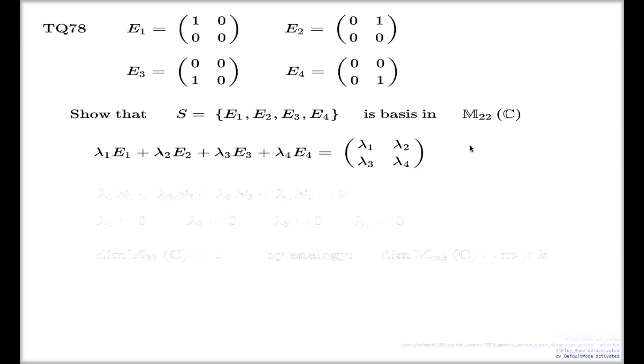So this identity by itself is already enough evidence to conclude that the set S is spanning. Because you see, every matrix of size 2×2 with any complex entries can be split into such representation. Here it is. So just by writing such identity and saying the right words, you can claim that the system is spanning.